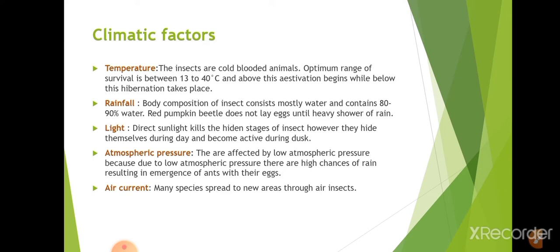The second climatic factor is rainfall. The body composition of insects consists mostly of water, containing 70 to 80 percent water. If there is no proper moisture in the environment, insects are not able to lay eggs. For example, the red pumpkin beetle does not lay eggs until a heavy shower of rain occurs.